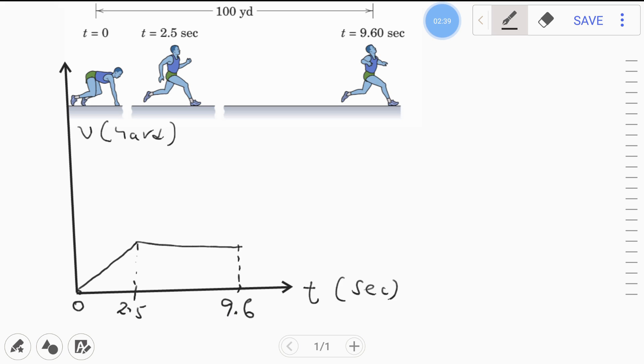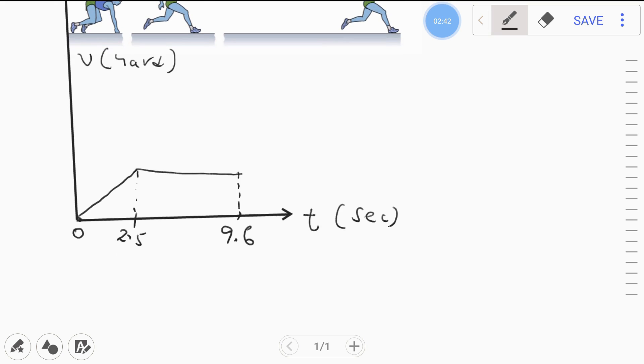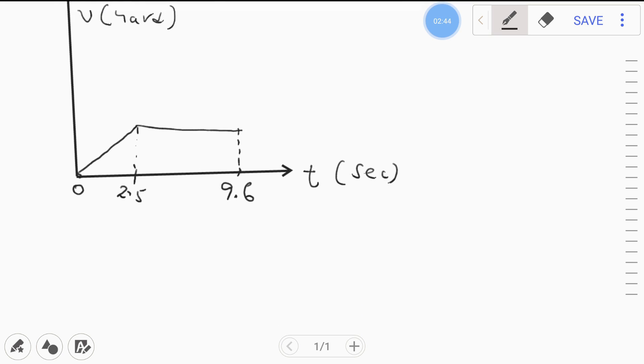After 2.5 to 9.6 seconds. Now as you remember from different classes or from elementary school, you recognize that the area of the velocity-time graph is displacement or distance. So area of v-t graph is displacement.